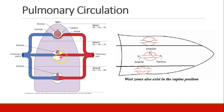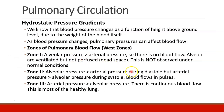In zone 2, the alveoli are somewhat inflated. The pressure in the pulmonary artery is higher than the alveolar pressure, and the pressure in the pulmonary vein is lower than alveolar pressure. Blood is able to flow through the alveolus during systole but not during diastole. Blood flows in pulses here, so we do get some oxygenation.